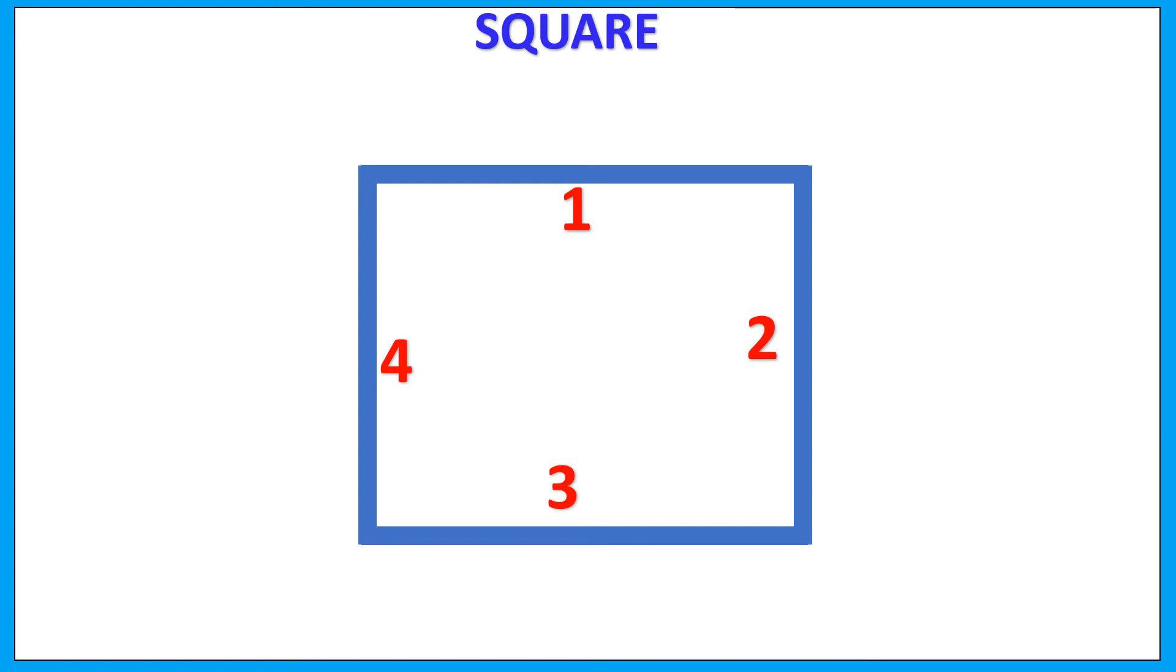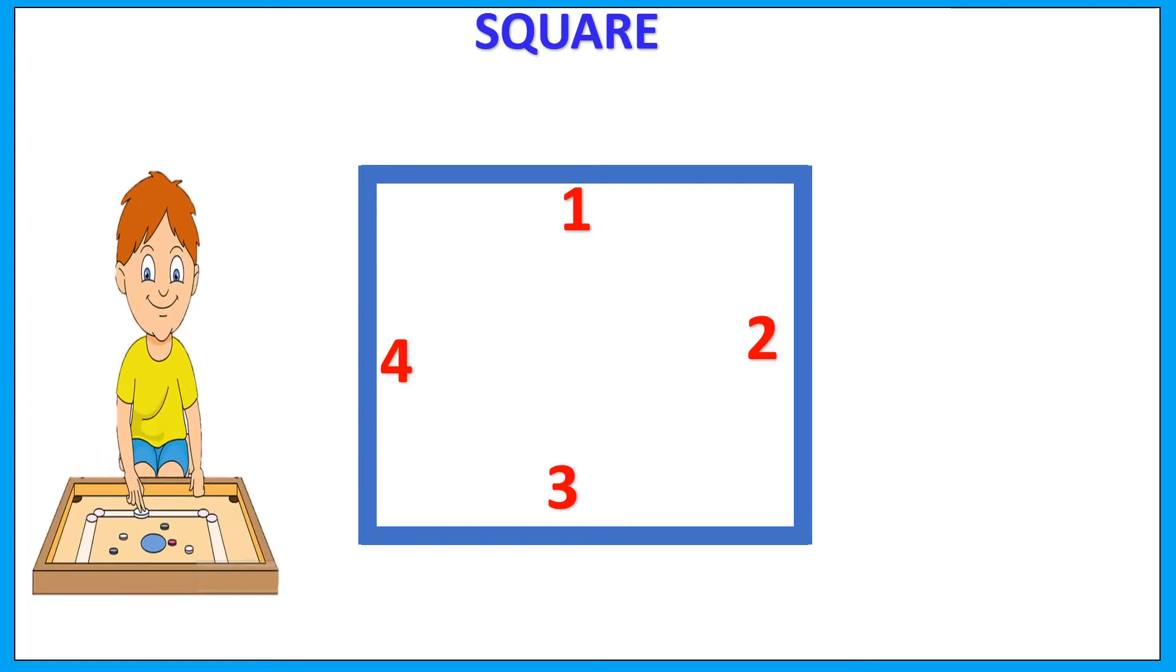A few things around us that are in square shape. For example, carom board. Chess board.